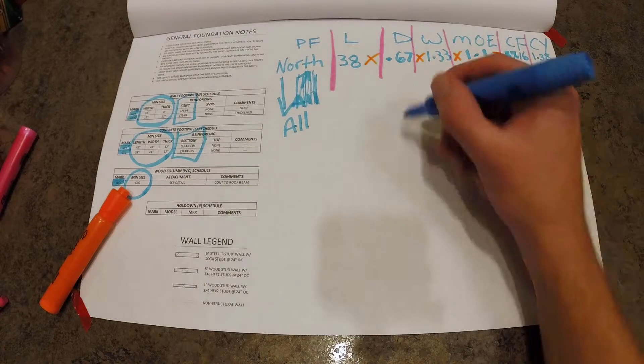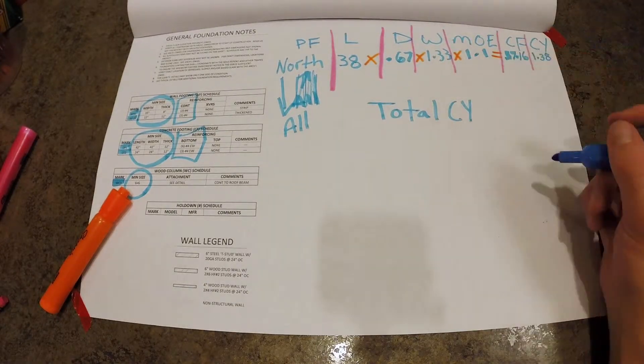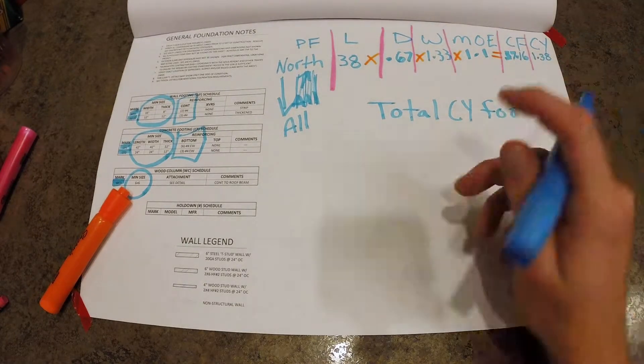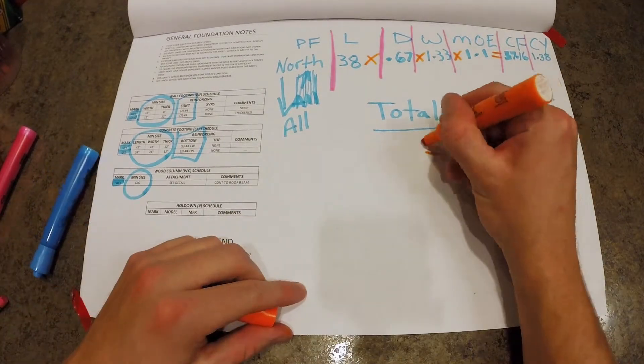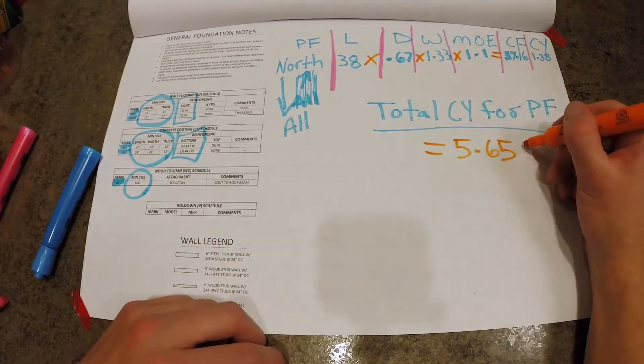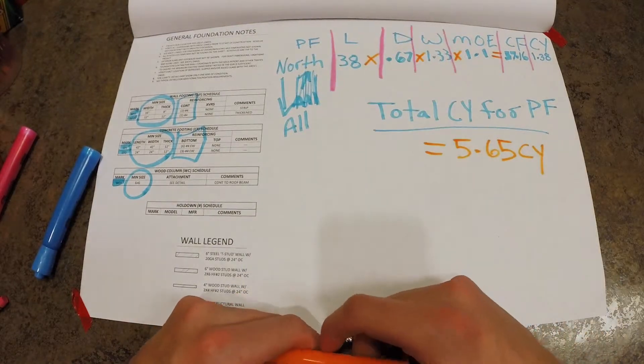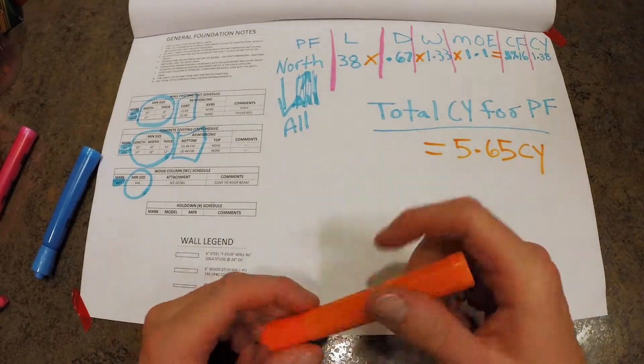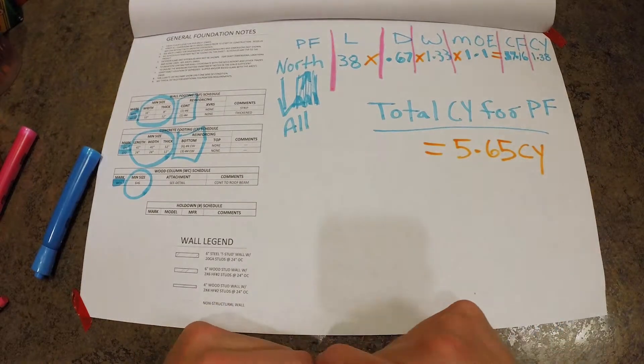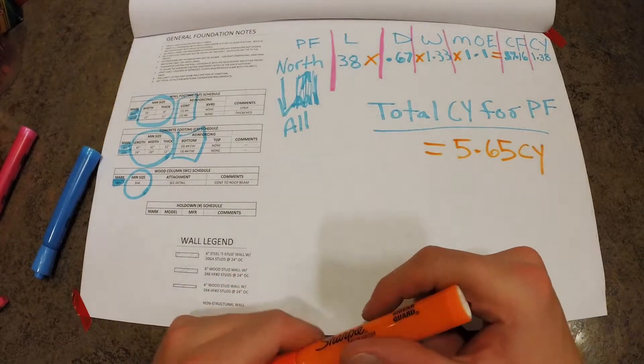We're going to do that for all the walls. And to spare you all the math, we'll give you the total for cubic yards of our footing on the perimeter of the main slab. It's going to be 5.65. Now this doesn't count the patio. This doesn't count the overall slab thickness. But we just want to show you the idea of what's going on here before we move on.